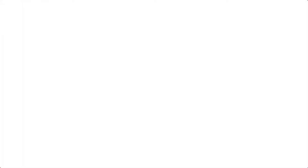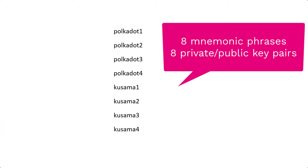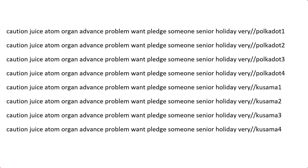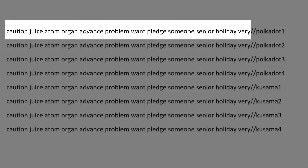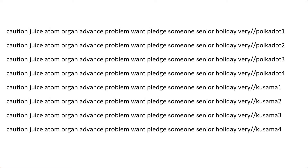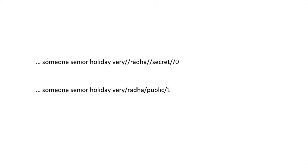What if you want to create multiple accounts on a network or across multiple networks in the Polkadot ecosystem? By multiple accounts, I mean multiple private-public key pairs. It quickly becomes quite tedious to keep track of multiple mnemonic phrases. But what if we can derive new accounts from a single mnemonic phrase? You just have to remember a seed phrase and the derivation path to access the respective accounts. You can derive new accounts by appending strings at the end of the mnemonic phrase, separating them using a slash or a double slash.